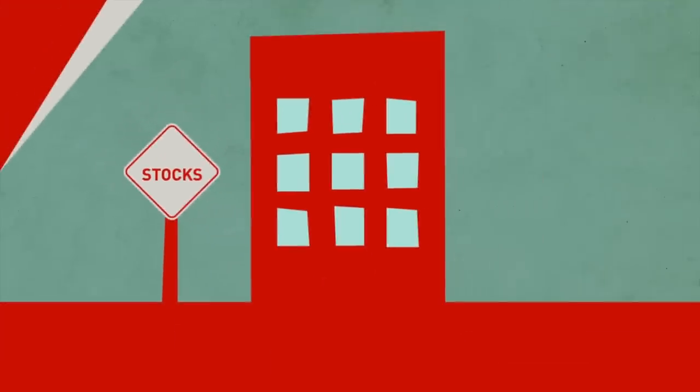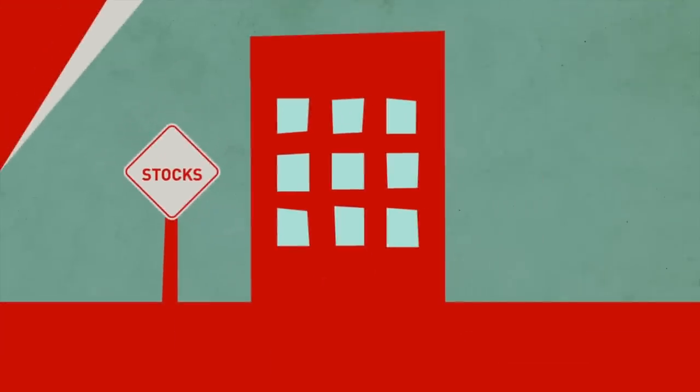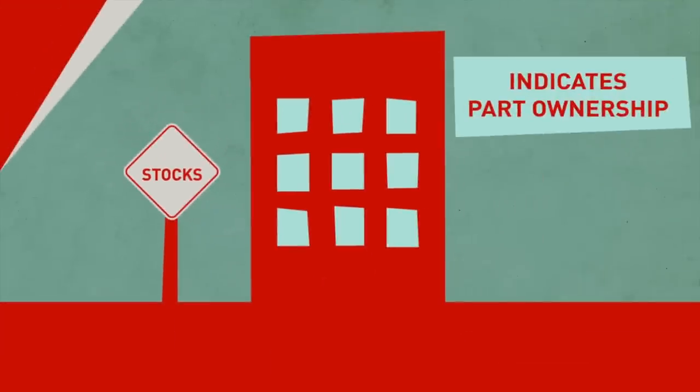By now, you may have a basic understanding of stocks, which are securities that indicate ownership in a company and represent a potential claim on part of its assets and earnings. Let's take a look at the two primary categories of stocks: common and preferred.